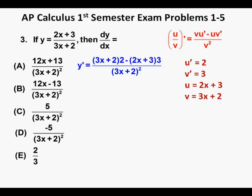Next we apply the distributive property of algebra and multiply each term inside parentheses by the number outside parentheses. And using that property we have y prime equals 6x plus 4 minus 6x minus 9.